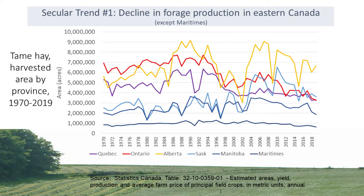Secular trend number one is the decline in forage production in eastern Canada, specifically in Quebec and Ontario, excluding the Maritimes. Using tame hay as a proxy for forages in general, this is data from Statistics Canada showing the area of tame hay harvested by province between 1970 and 2019. If you look at Ontario — the red line — and Quebec — the purple line — we see an overall decline in hay production. In the Maritimes it's held steady, while in the prairies those areas have seen an increase or at least maintenance of harvested area. It's really only in Ontario and Quebec where we've seen a large decline over the past 50 years in forage.